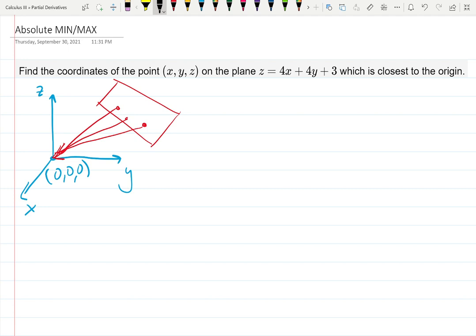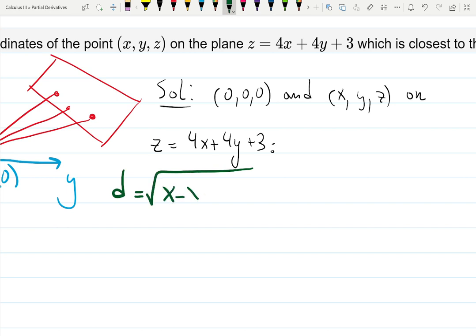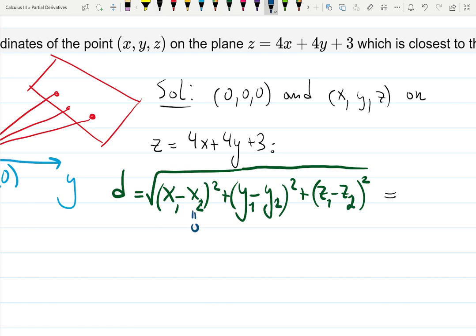To start with this problem, you need to remember the formula for the distance between two points. We're looking at the distance between (0,0,0) and a point (x,y,z) on the given plane. The formula is d equals the square root of (x minus x1) squared plus (y minus y1) squared plus (z minus z1) squared. In this case, it's easy because these are zeros.